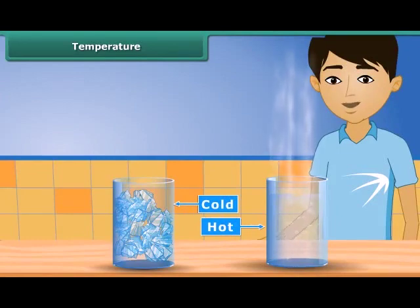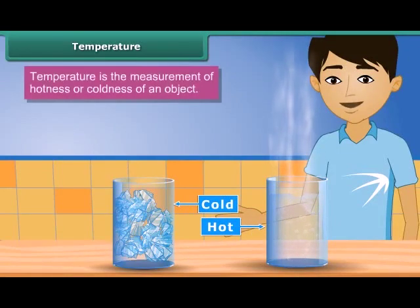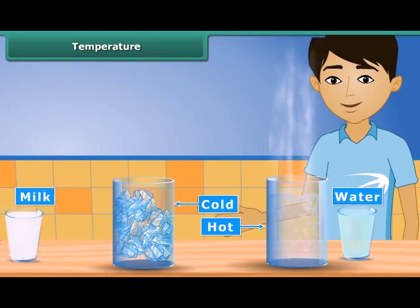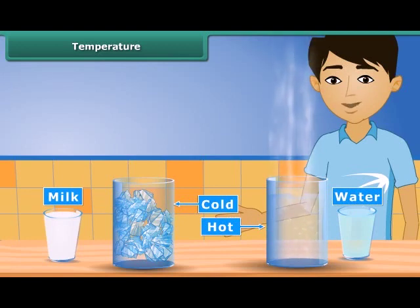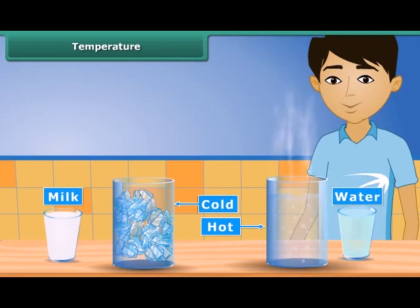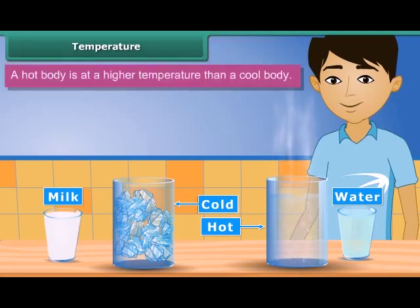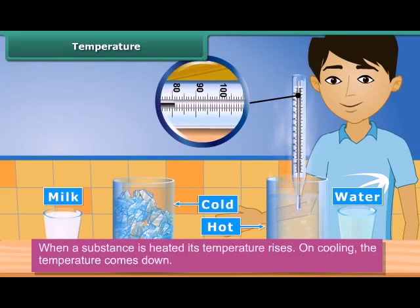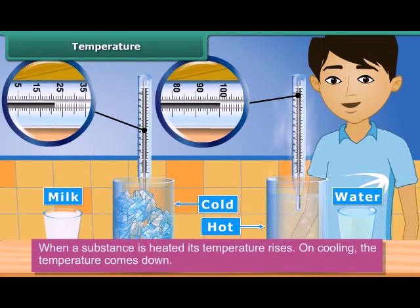Now we will learn the concept of temperature. Temperature is the measurement of hotness or coldness of an object. We say that water from the fridge is cold and milk is hot. How much cold is the water? Is it cooler than ice? How much hot is milk? Is it hotter than boiling water? For this we need a measure to know about coldness and hotness. A hot body is at a higher temperature than a cool body. When a substance is heated, its temperature rises; on cooling, the temperature comes down. The degree of hotness or coldness in a body is described as its temperature.